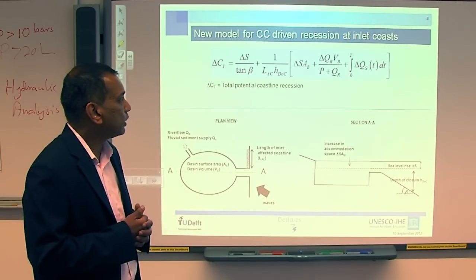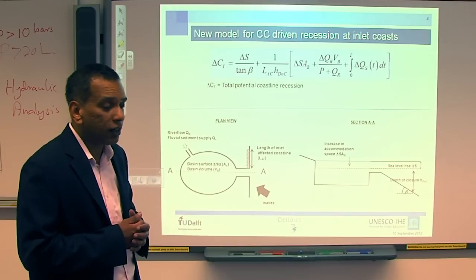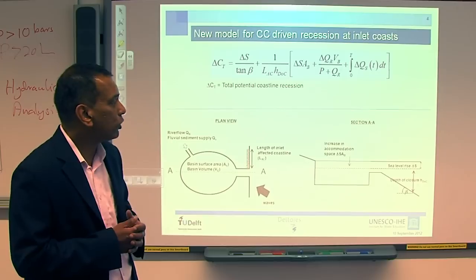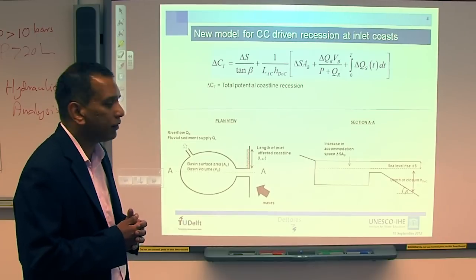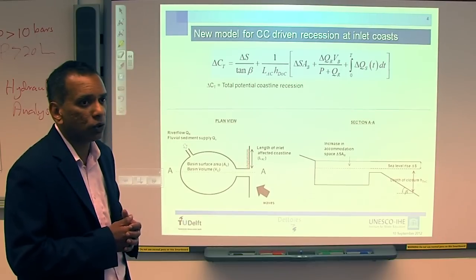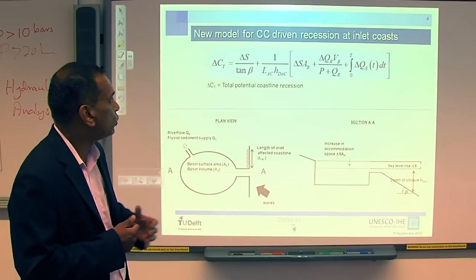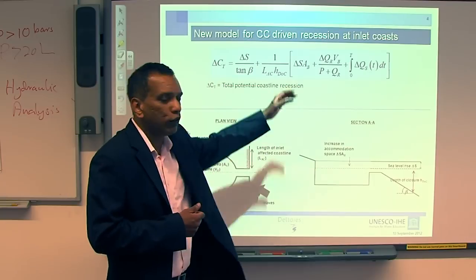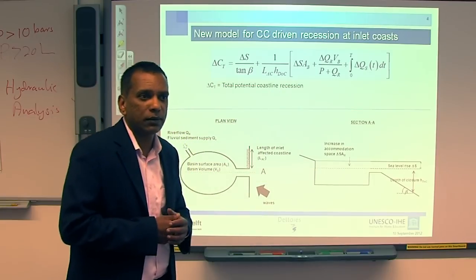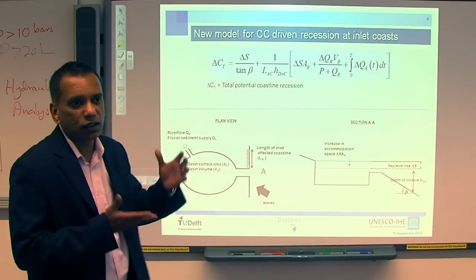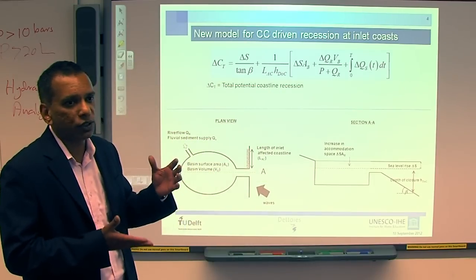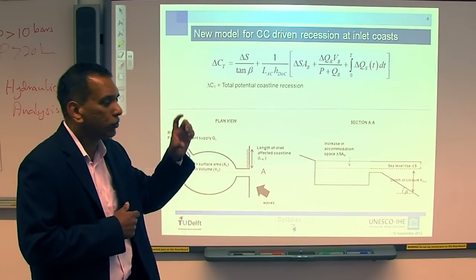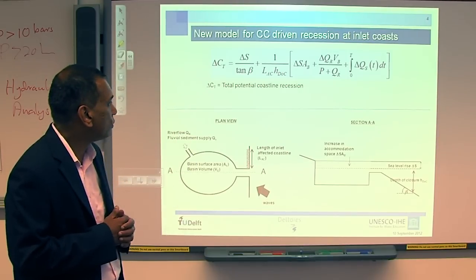Because the model is really fast, we can also do multiple simulations like Monte Carlo simulations that will take into account the uncertainty associated with parameters like sea level or river flow changes due to climate change. There is a lot of uncertainty in IPCC projections, so we can account for those and come up with a range of coastline change values.